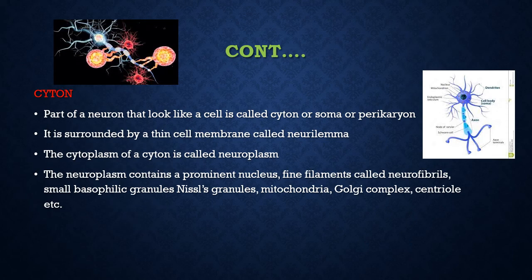The first part is Cyton. Cyton means the part of Neuron that looks like a cell — it will be round, covered by a membrane, and the center contains a nucleus, which is surrounded by cytoplasm. The other name of Cyton is Soma or Pericarion. This Cyton is covered by a membrane called Neurylemma, and inner to that is a fluid-like substance called Neuroplasm.